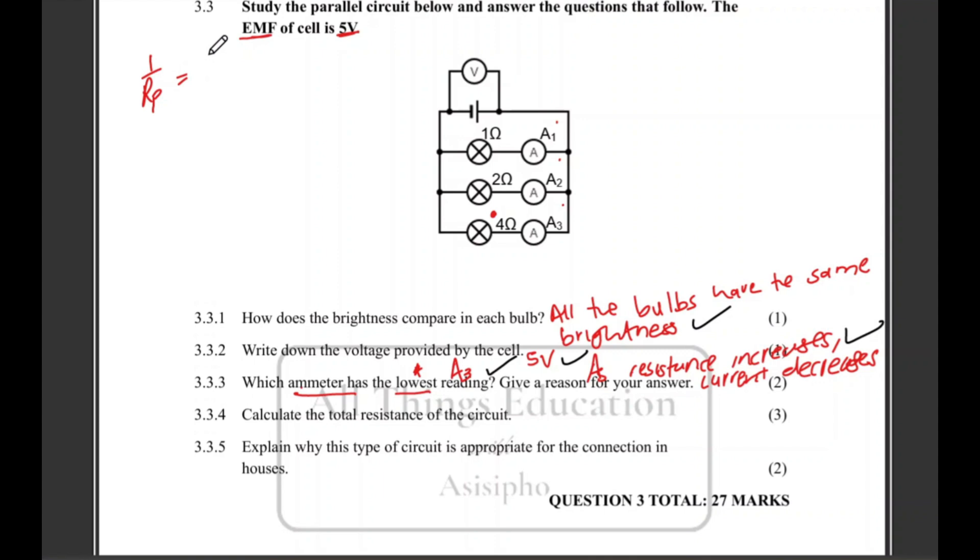The formula: 1 over Rp equals 1 over R1 plus 1 over R2 plus 1 over R3. Remember this is how we calculate the total resistance for a parallel circuit. So you then substitute what you are given: 1 over 2, 1 over 4, then you enter all of it on your calculator. You should be getting 7 over 4, then you flip it to 4 over 7. You should be getting 0.57 ohms. Three marks with the unit at the end.